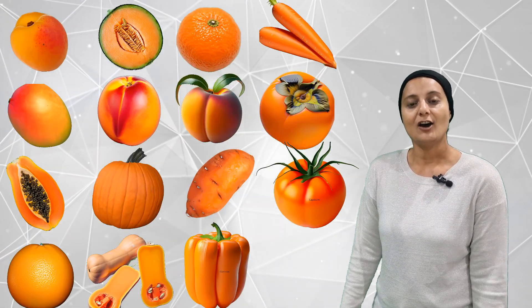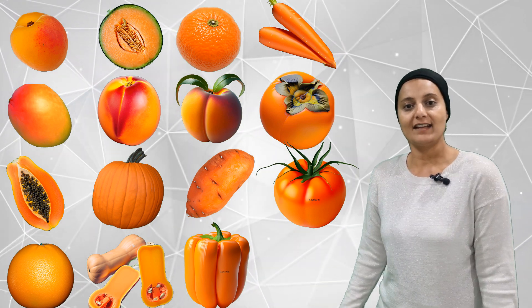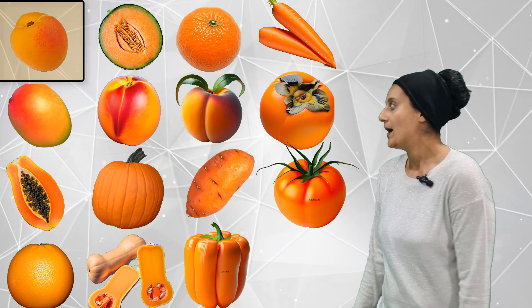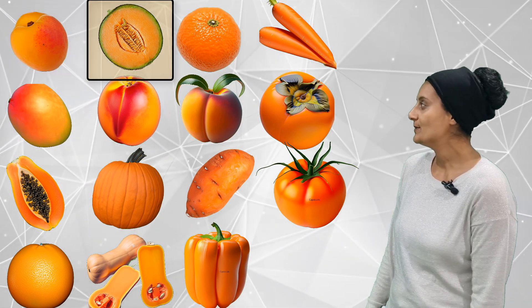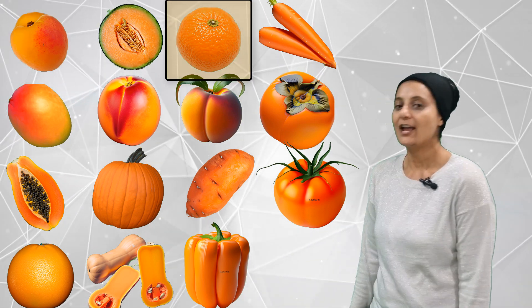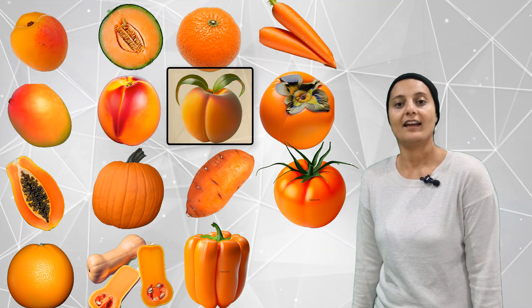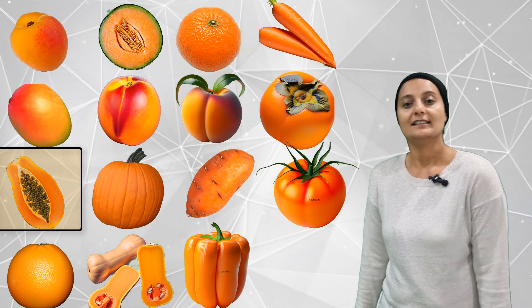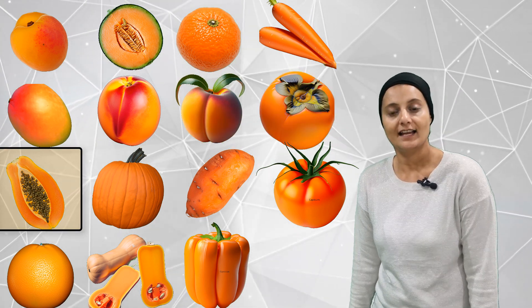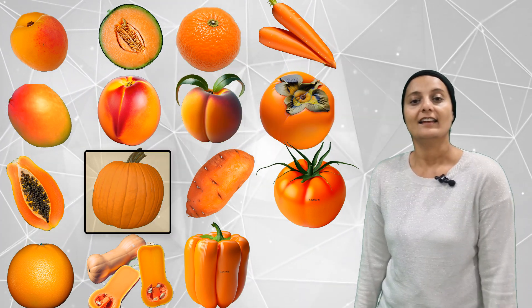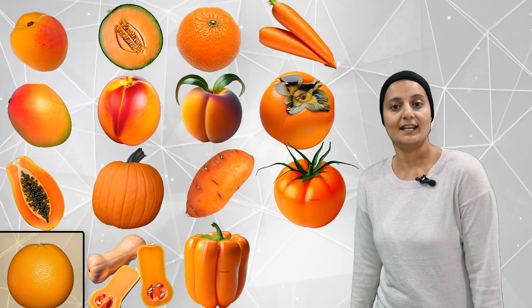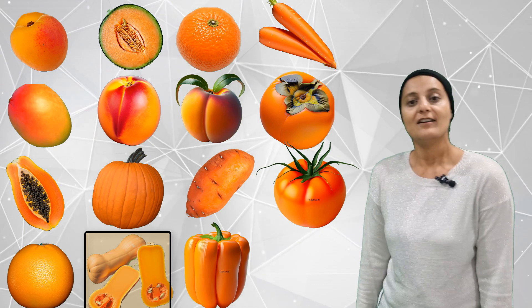Let's see how many orange fruits and veggies we can find. 1, 2, 3, 4, 5, 6, 7, 8, 9, 10, 11, 12, 13, 14, 15. Fifteen orange fruits and veggies.